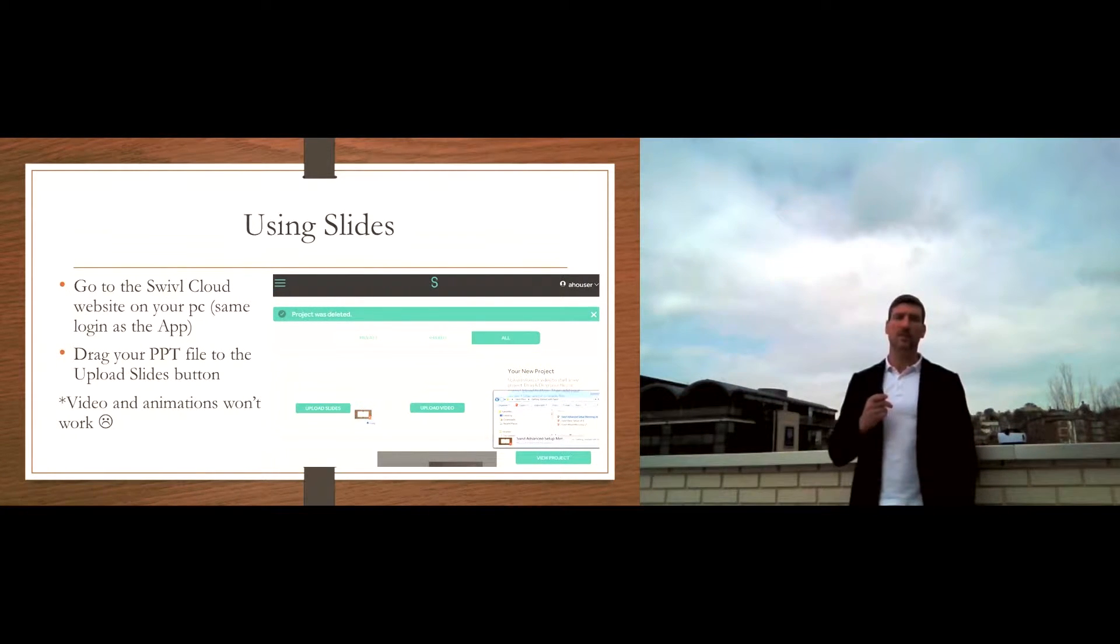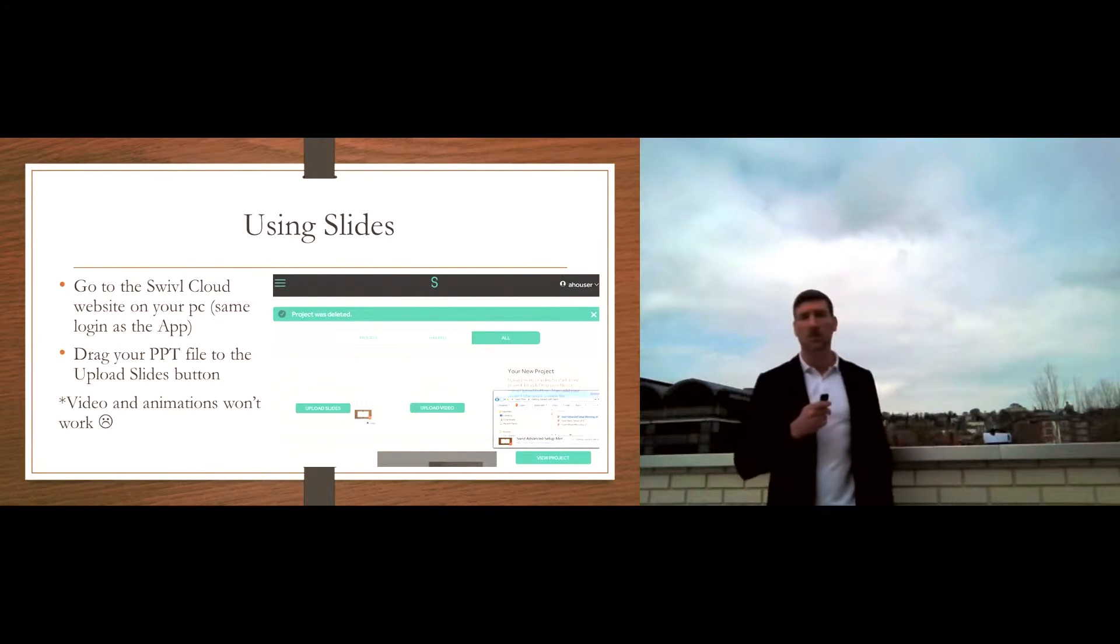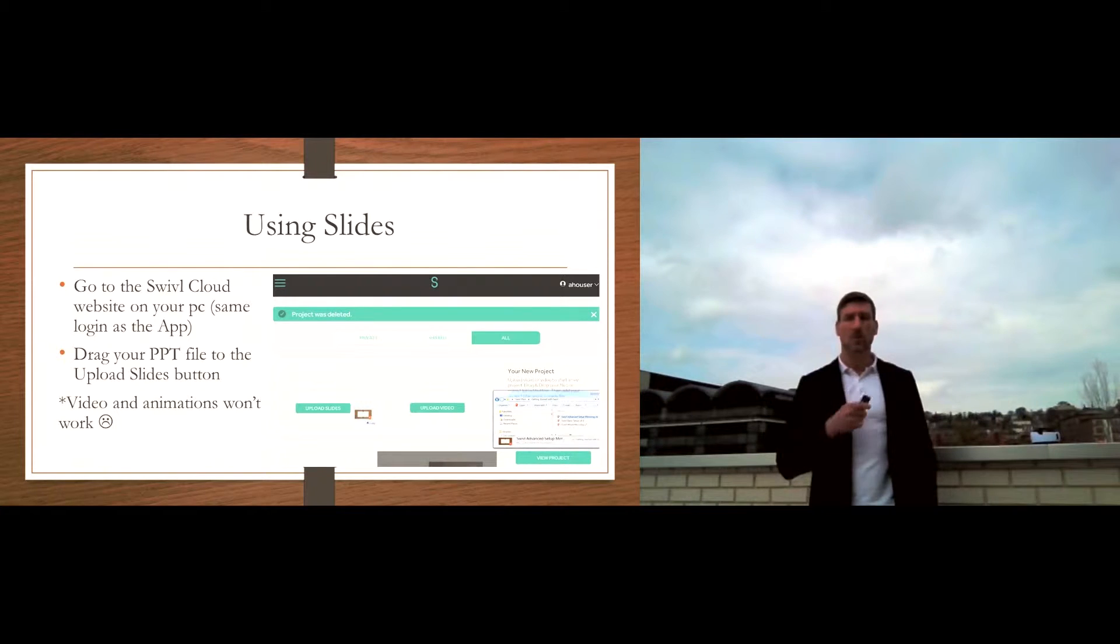Once you've done that, the next thing to do is to actually get the slides onto Swivel. You'll need to go onto your computer, your desktop or your laptop to do so. Go onto the Swivel Cloud website and drag and drop your PowerPoint file into the appropriate blocks there.